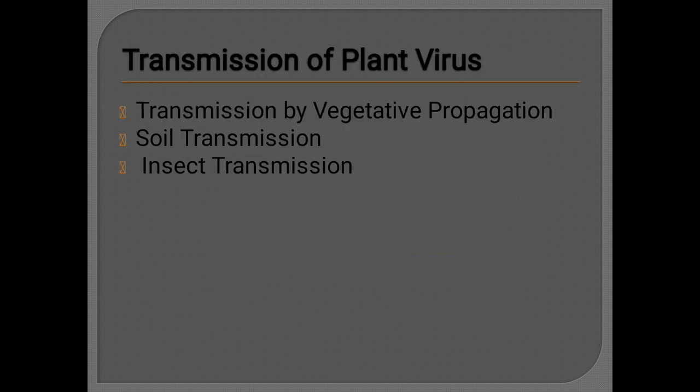Transmission of plant viruses occurs through vegetative propagation, soil transmission, and insect transmission. From already infected soils, the virus infects the host plants, and through insect transmission also a virus can infect a plant.